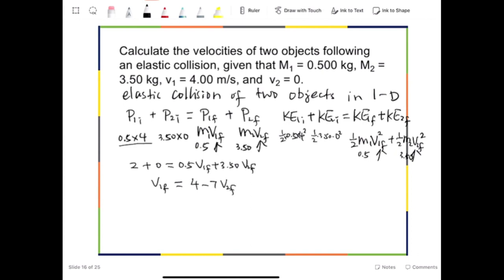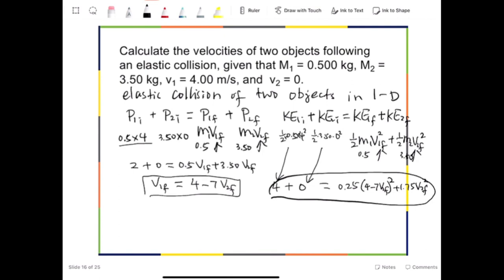And then we can plug v₁f into the second equation, which now becomes 4 plus 0 equals 0.25 times (4 minus 7v₂f) squared, plus 1.75v₂f squared. Now, let's focus on this equation. This equation will help us solve for v₂f, and then we can plug v₂f back into this equation for v₁f. That's our strategy.